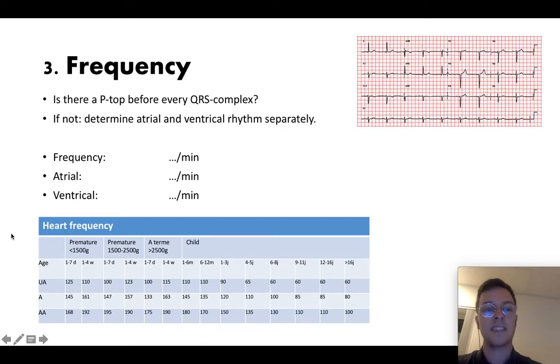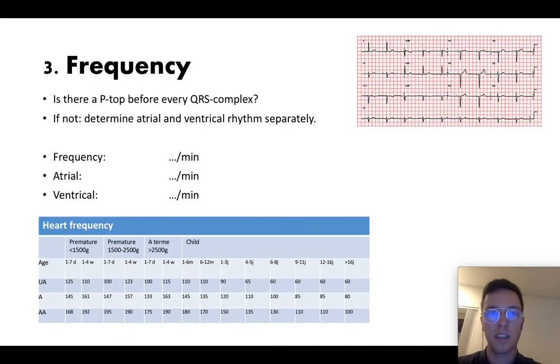I added this table of normal values for heart frequencies you can use to check your own values. So for example if you have an ECG of a child which is four to five years, the average heart frequency should be 110, the under average can be till 65 and above average 135. More or less is not okay.